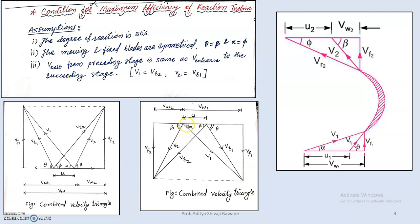To draw the velocity triangle: first draw a base straight line, then from one point draw the blade velocity u, and from the end of that draw v1 considering angle alpha. Next, considering angle theta at the end of u, draw vr1 — wherever it meets gives the intersection point. A perpendicular from that point gives vf1. These methods will be explained clearly in the next session with graphical examples. For now, just understand what a combined velocity triangle is — one where inlet and outlet velocity triangles are combined.